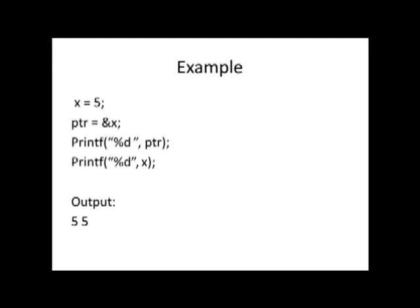As you can imagine, if you have a box and the tube is connected to the box, whether I look through the tool or look through the box, I will see the same thing. Similarly, if you had to print the pointer and print the variable, in this particular example it would be the same thing. And the output would be 5 and 5.